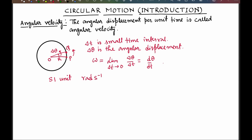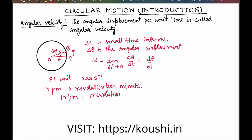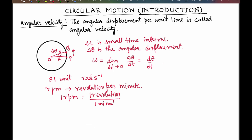There is another unit of angular velocity known as RPM, that is revolution per minute. 1 RPM is equal to 1 revolution per 1 minute. We know that for one complete rotation, a particle covers an angular displacement of 2 pi radian. Therefore, 1 RPM is equal to 2 pi by 60 radian second inverse.